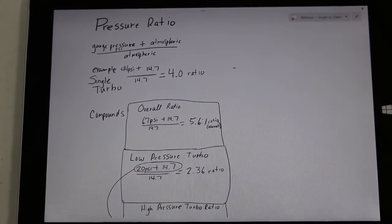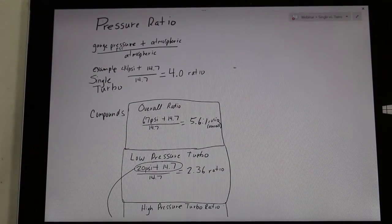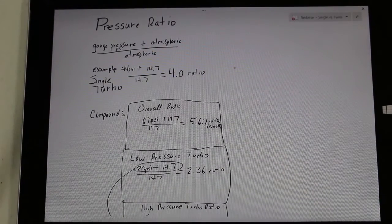This happens to be the maximum amount typically seen on a turbo compressor map. Hey, can we show a compressor map? Do we have one we can put on?